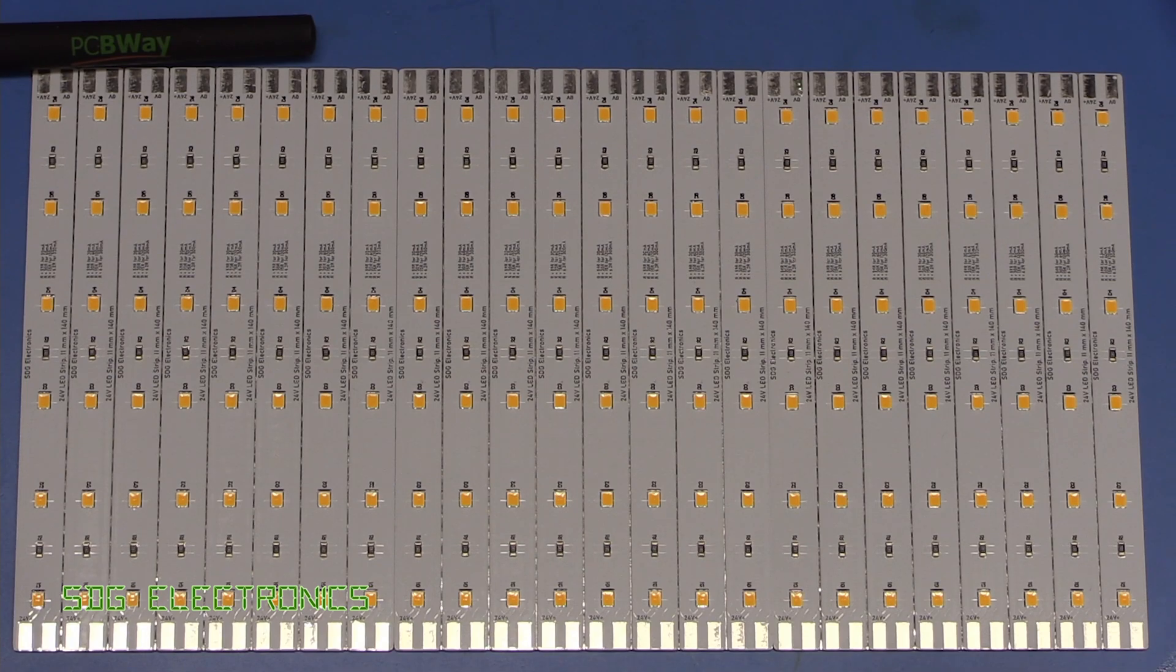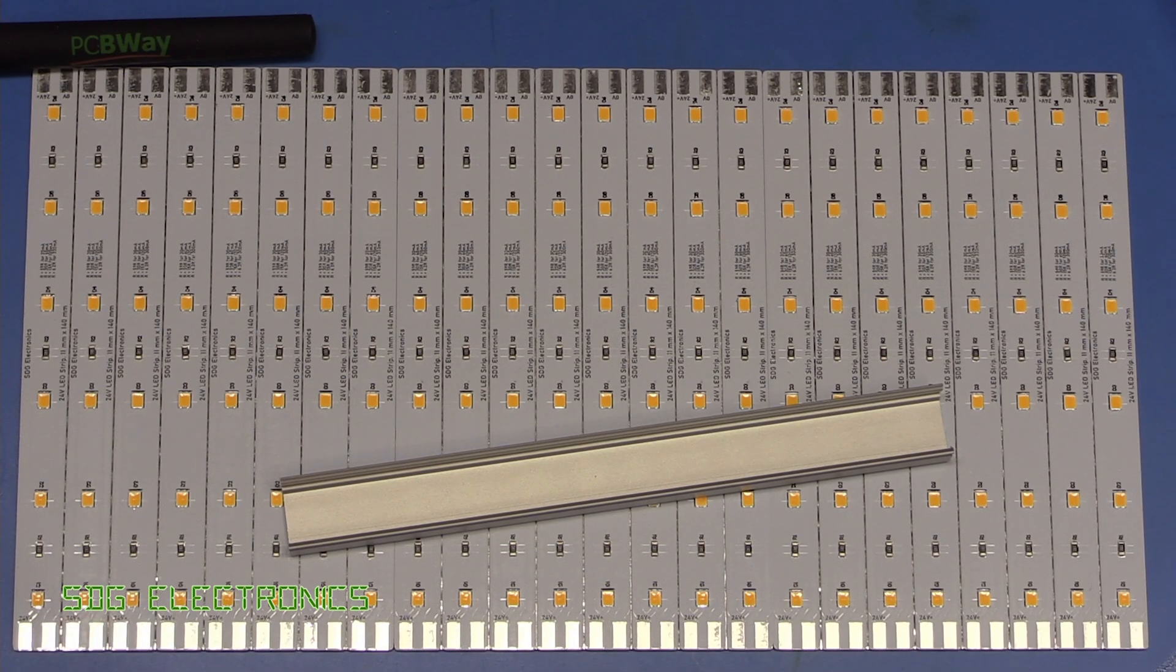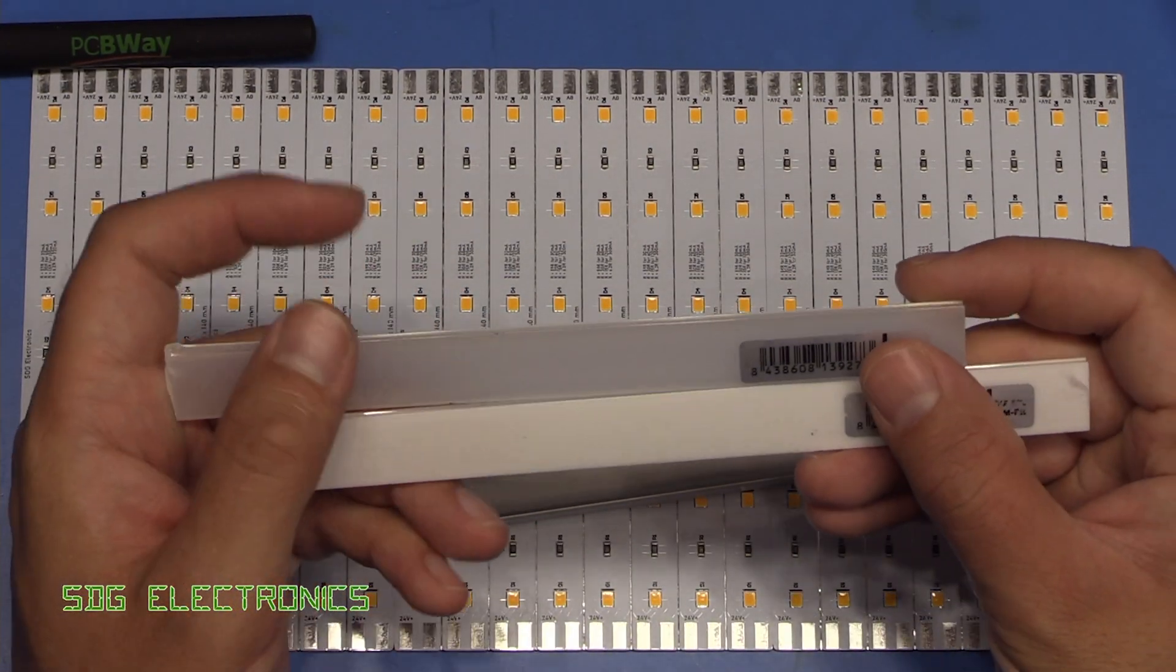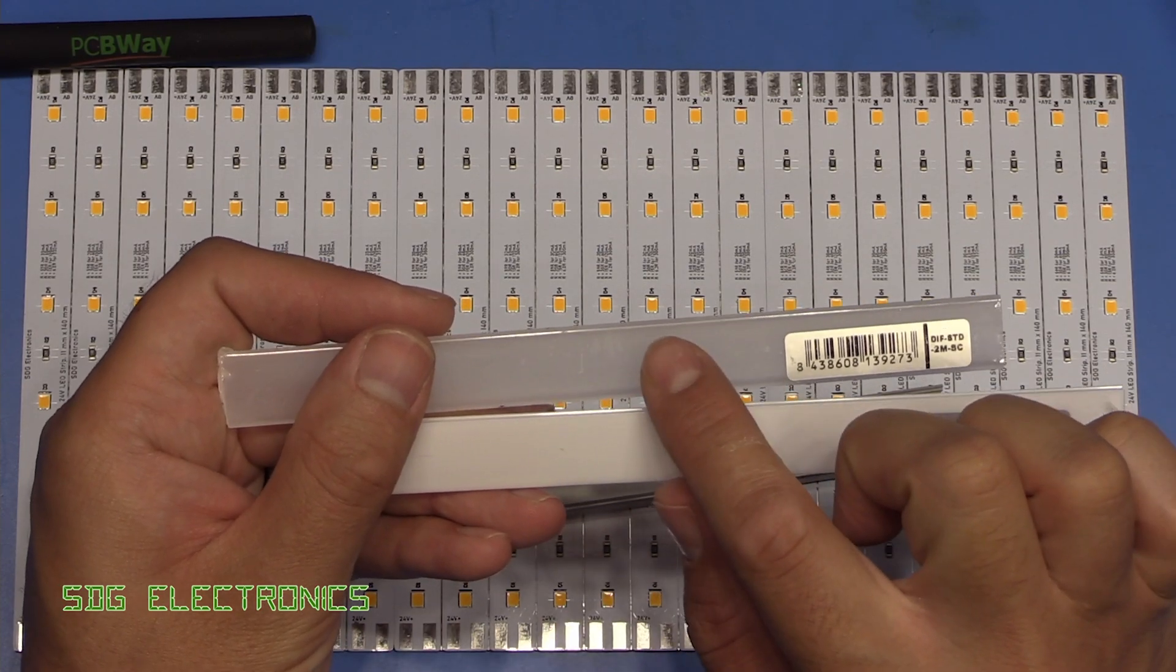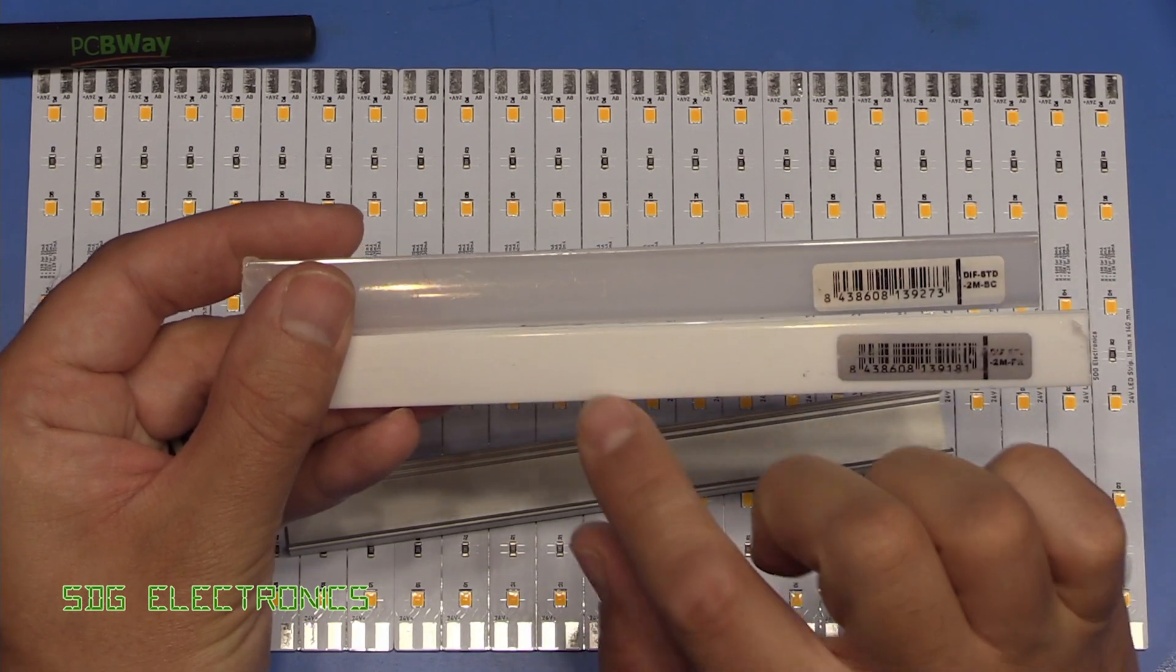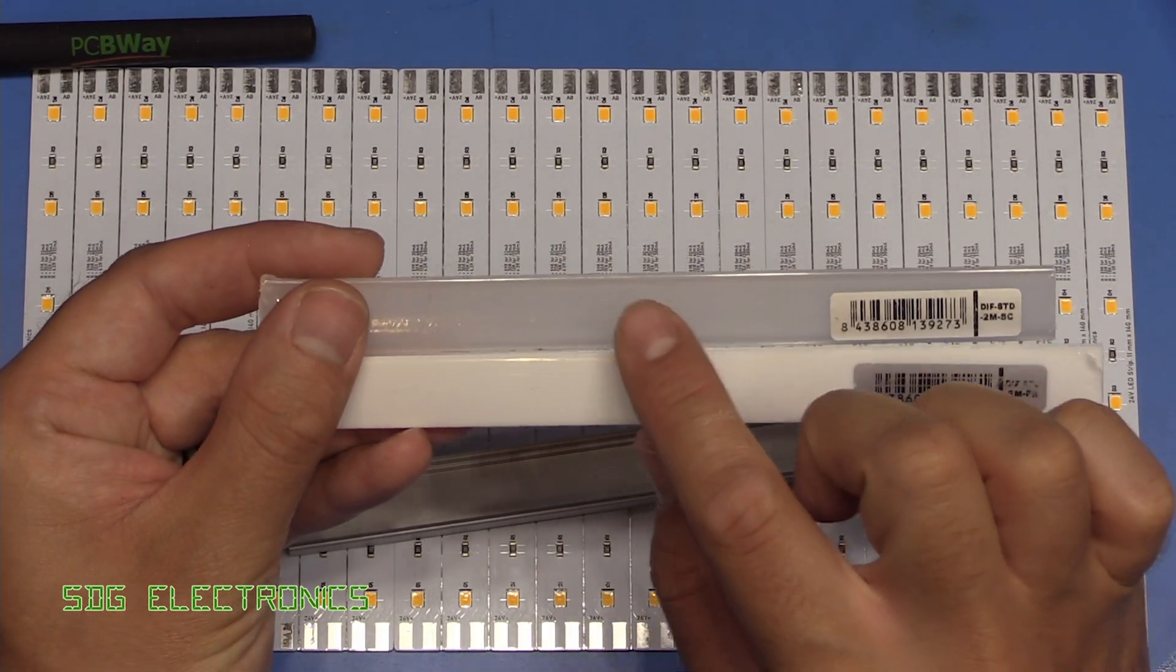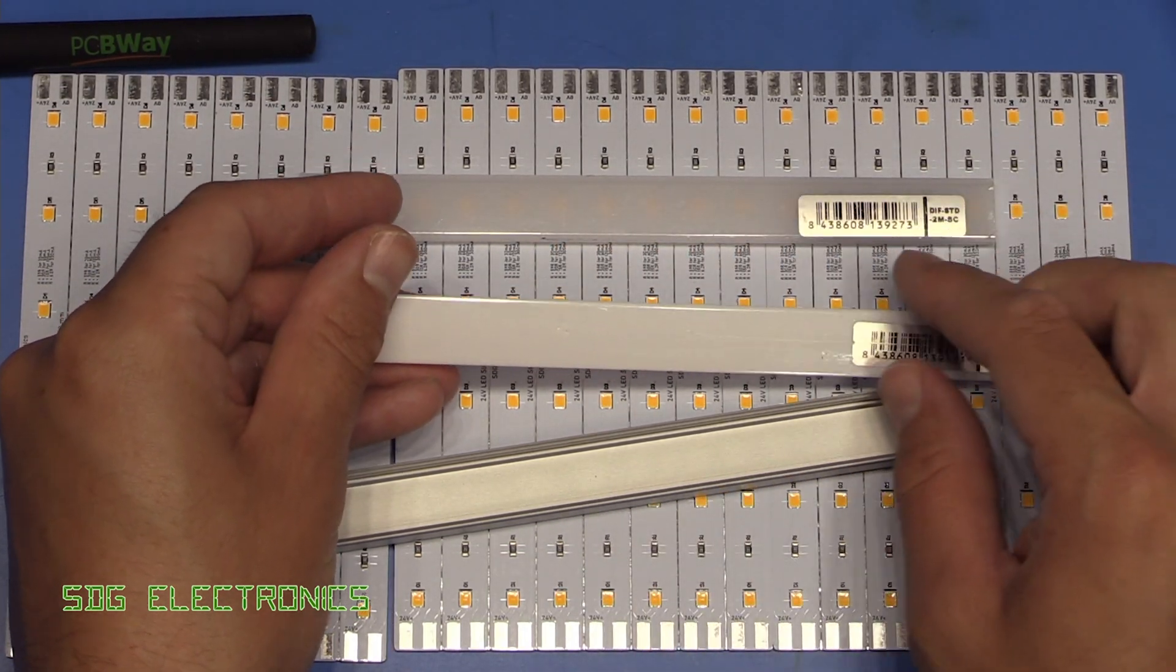Now what I want to look at next is the diffuser material. So as I mentioned, we've got this channel and I've got two of the different types of diffuser. This one is the opal and this is the semi-transparent diffuser. You can see there is quite a bit of a difference between the two. This one is extremely opaque. This one you can kind of see behind it a little bit. You can see the LEDs there.